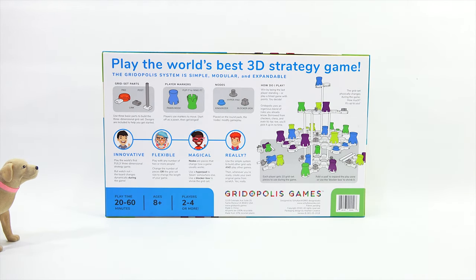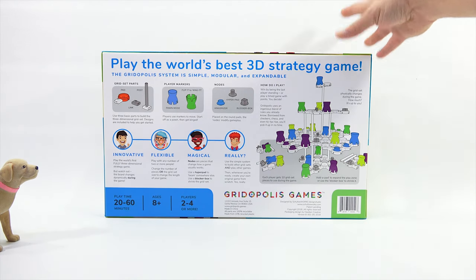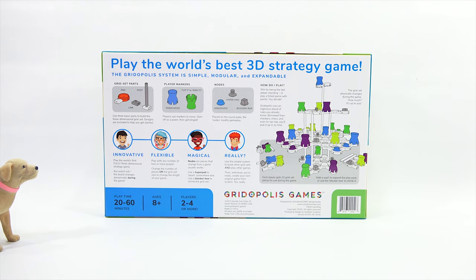All right, how about this? We'll do a little train-off there. You do box 1. Box 1. The one that says Grid Set Parts. Yes. Use three basic parts to build the three-dimensional grid set. Designs are included to help you get started.